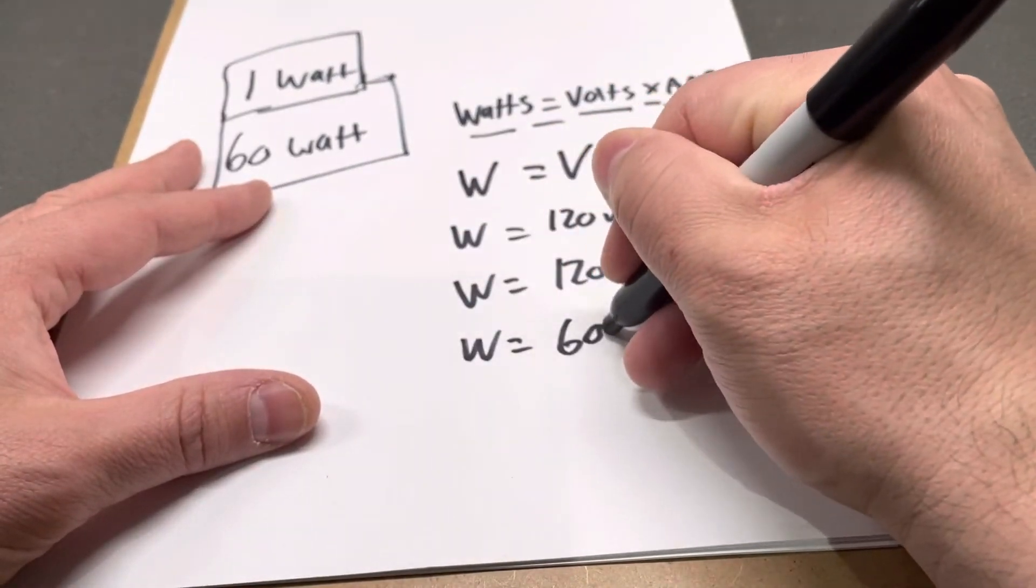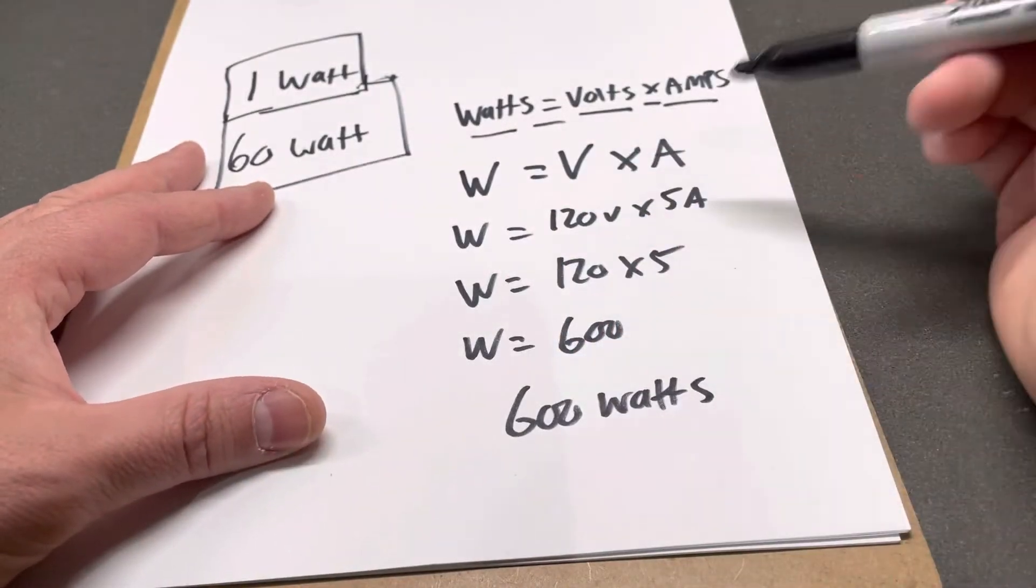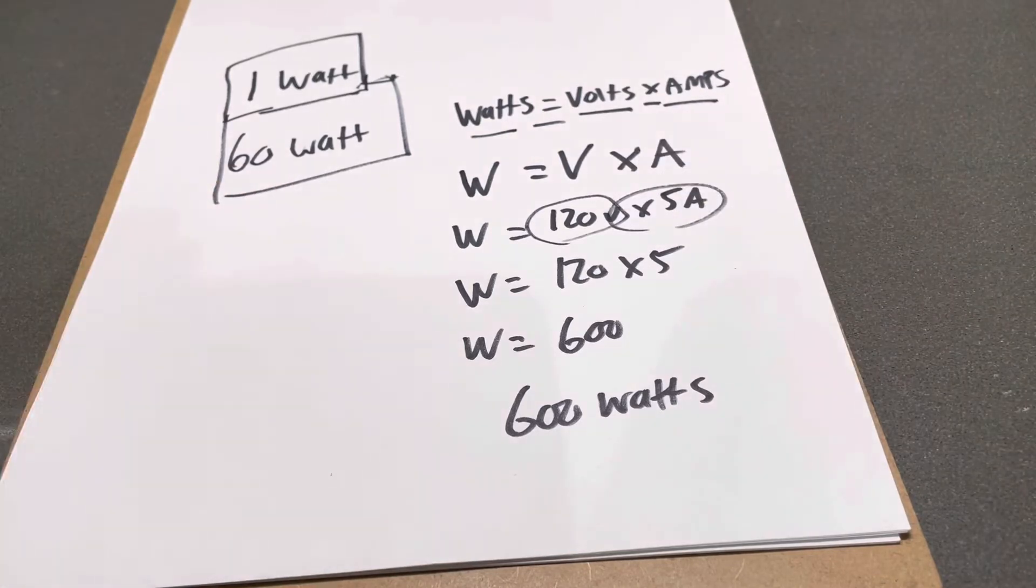So this unit will have a wattage of 600. 600 watts would be the wattage of something that has 120 volts and 5 amps because you're multiplying them together.